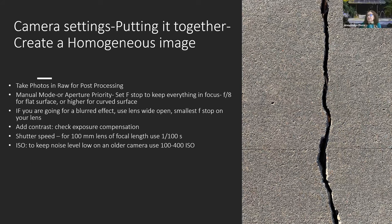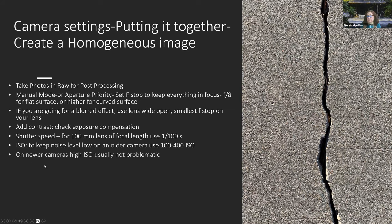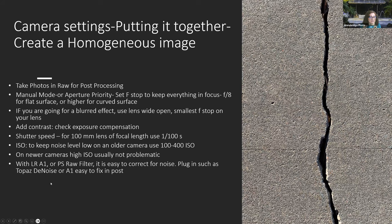Look at your histogram on your camera — you can see if there are too many highlights or too many dark areas. If it's too far to the left, it's too dark; if it's too far to the right, it's too light. You want to keep your noise level as low as possible. On older cameras, 100 to 400 ISO, but on newer cameras mine goes up to 32,000 ISO. You can still use programs like Lightroom, Adobe Camera Raw filter, or Photoshop to correct the noise.